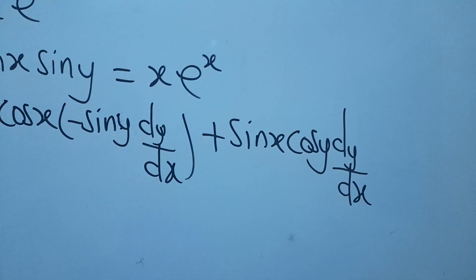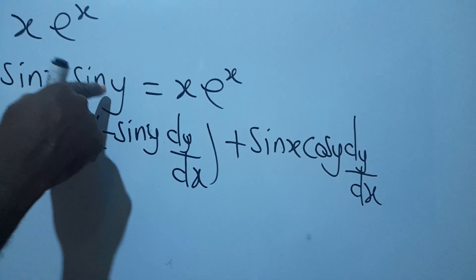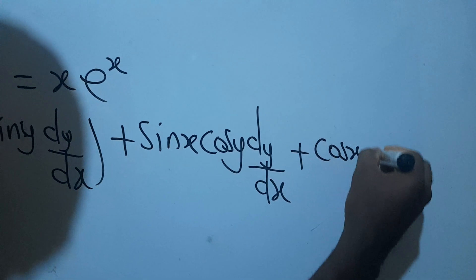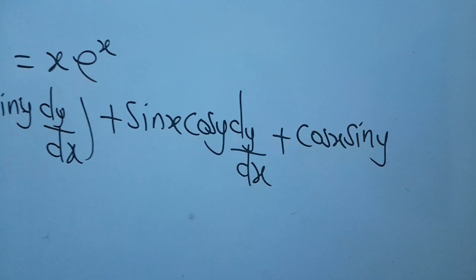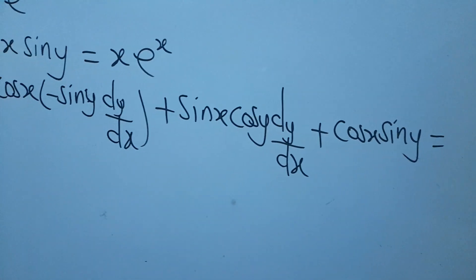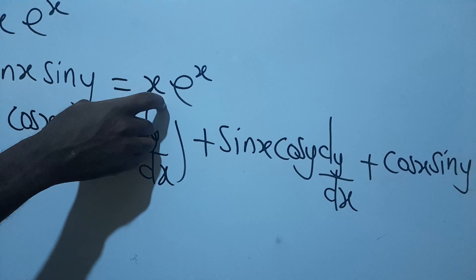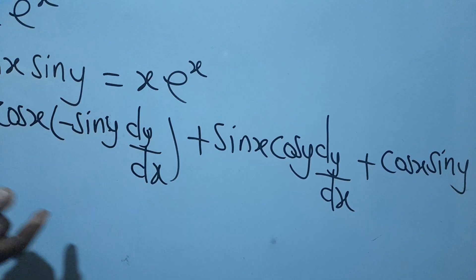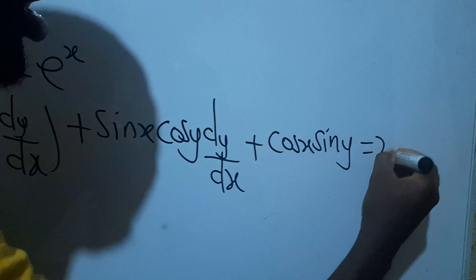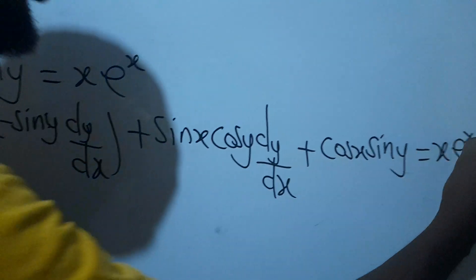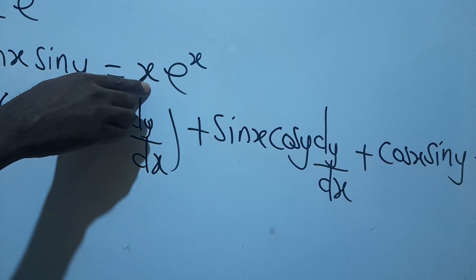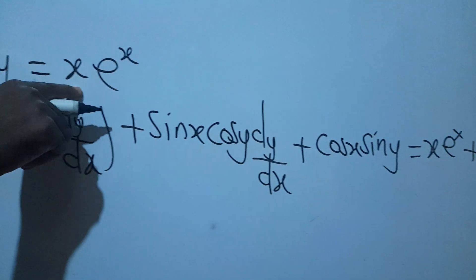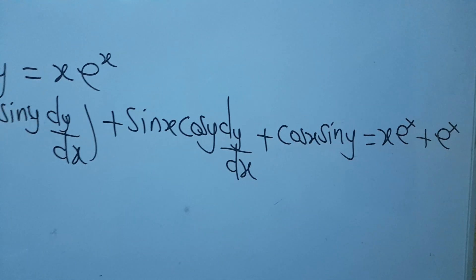Then I keep sin y and differentiate sin x, which gives cos x·sin y. On the right-hand side, differentiating x·e^x using the product rule: keep x and differentiate e^x to get x·e^x, then plus keep e^x and differentiate x, which gives 1, so that term is e^x.